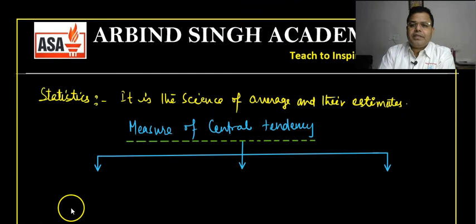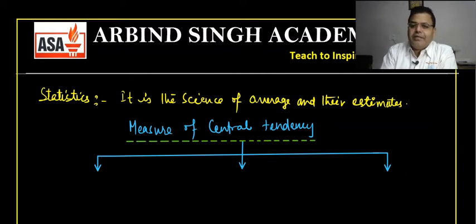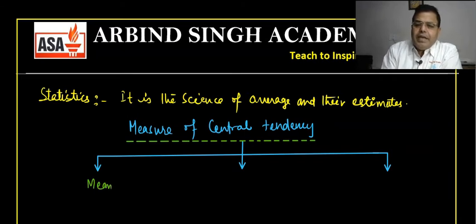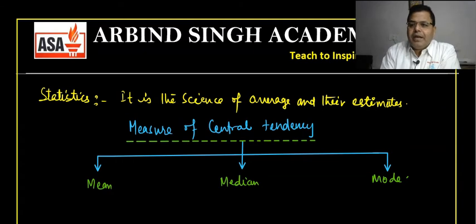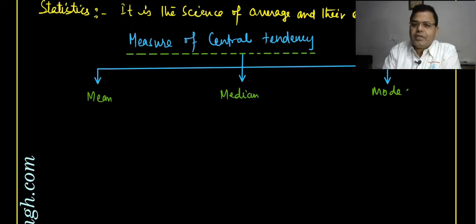Statistics is the science of average estimation. The average part — the measure of central tendency — you have learned earlier, where you calculate mean, median, and mode. These measures give a single number representing the wholesome data. But in this class, we will learn about the dispersion of data — how the data is concentrated and why it is important.